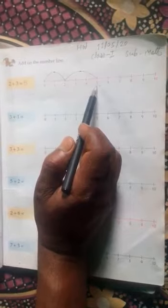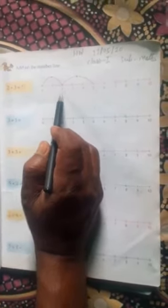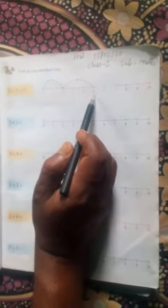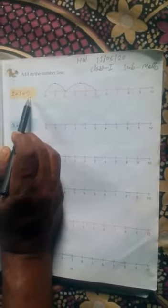You have counted 2 plus 3 equal to 5, or 2 plus 3 equals 5.